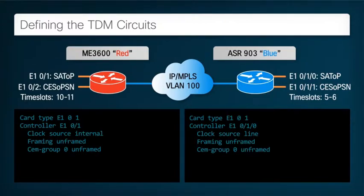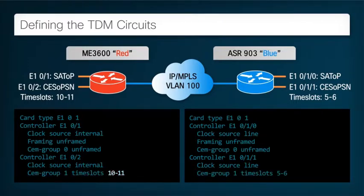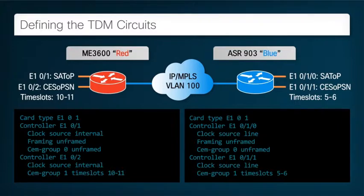Now to the structured TDM circuit. In this case, we define the clocking as previously — the same for both the E1 controllers at each location. Now we configure the SEM group with a very important difference from the previous E1. Because we only want to backhaul two time slots, we indicate which time slots to extract for the pseudowire. Note that the time slots do not have to be the same at each end; this allows some amount of grooming of the TDM circuits. Note also that we do not use the unframed keyword, thereby indicating that this is to be a CESoPSN pseudowire with a SEM group number of 1. This will create a SEM virtual device for configuration in the next steps.